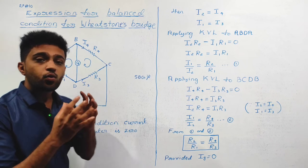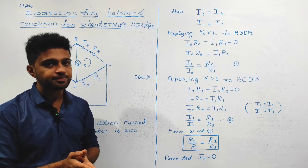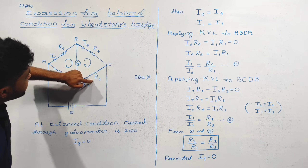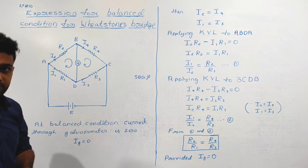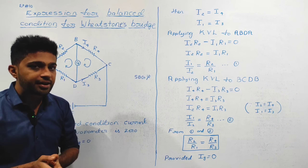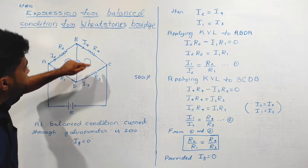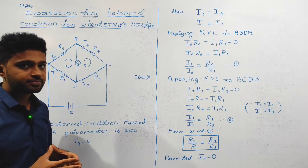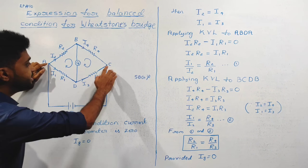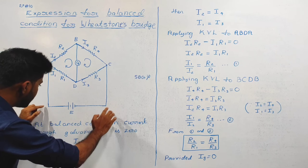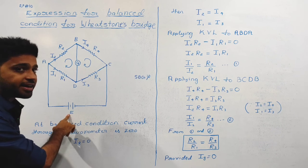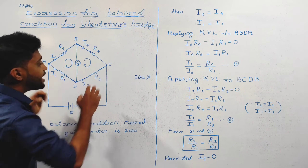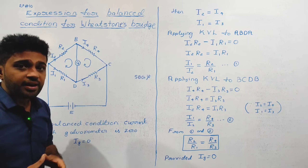We will study the Wheatstone bridge or Wheatstone network. It has four resistors, R1, R2, R3, and R4, which are connected to form a quadrilateral. It is connected such that R1, R2, R3, R4 form a quadrilateral. The cell of EMF is connected, and the arm A to C is called the battery arm.